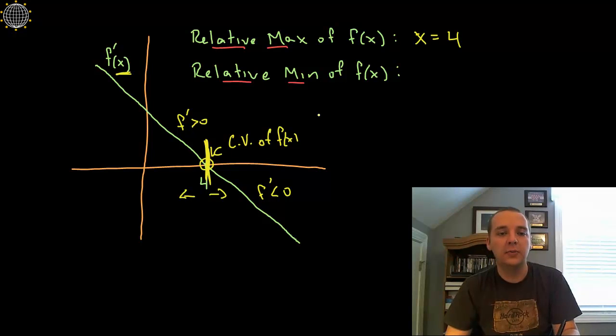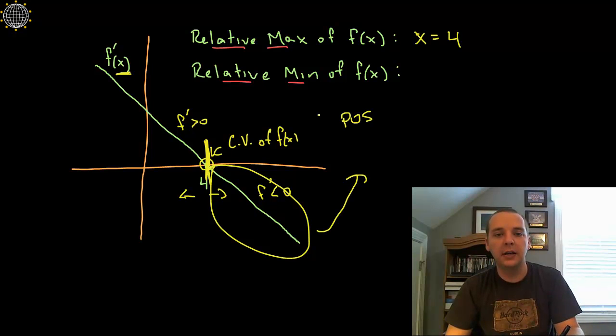Now as far as relative minimums go, I don't see any place where the derivatives go from negative to positive. See down here the derivatives are negative, I don't ever see them turning around and being positive again. I don't see that ever happening, looks like this is just a straight line at least as far as we can see. So relative minimums, there are no relative mins.